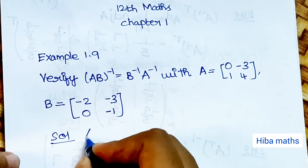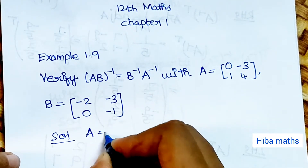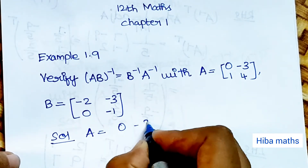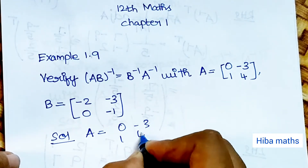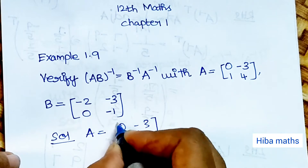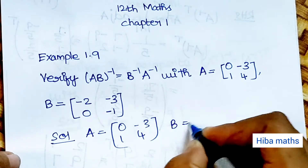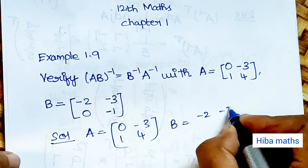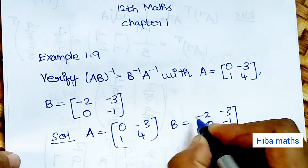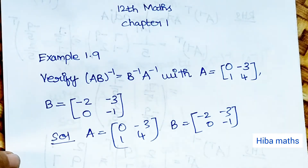We will solve the solution. Matrix A is equal to [0, −3; 1, 4] and B is equal to [−2, −3; 0, −1].